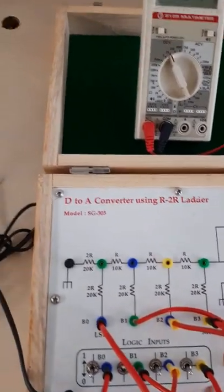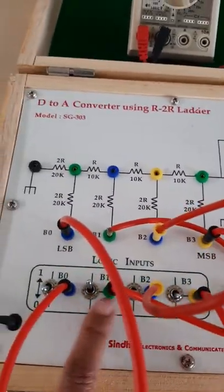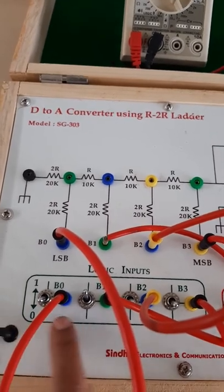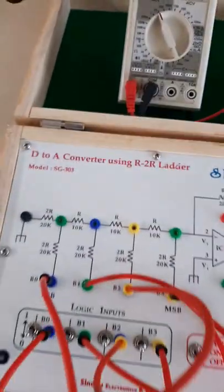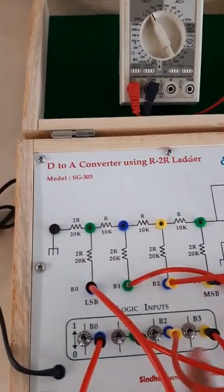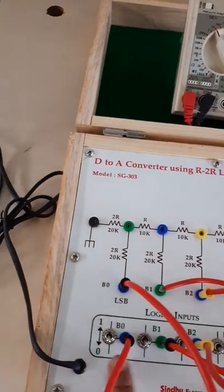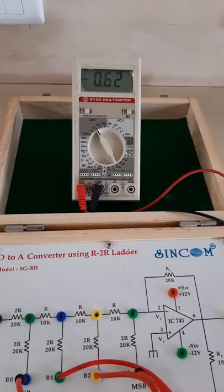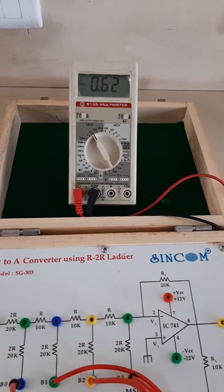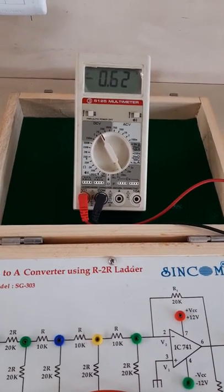Now first see the input position of the switches, all switches are in 0 position. So the input is 0 and the output is also 0. Now one by one we are changing the input switches. First is 0001, the output is 0.62. Why the negative sign? Because the op-amp is in inverting mode, so the output is negative.